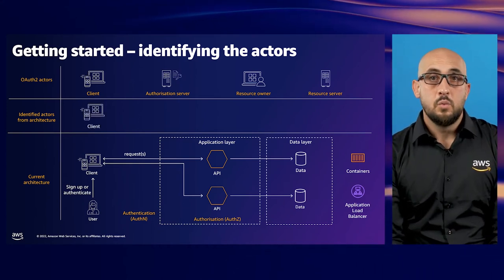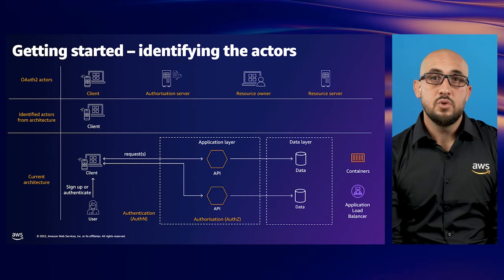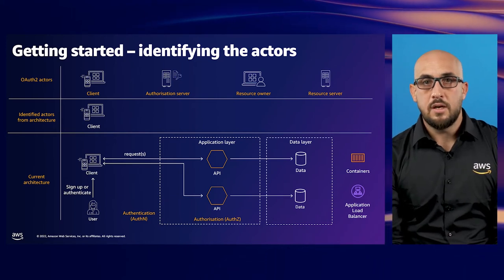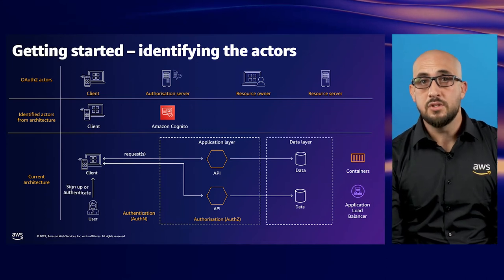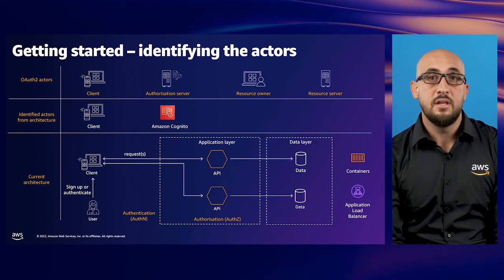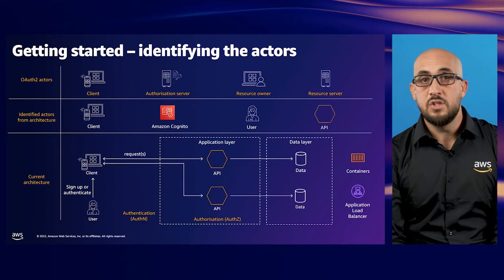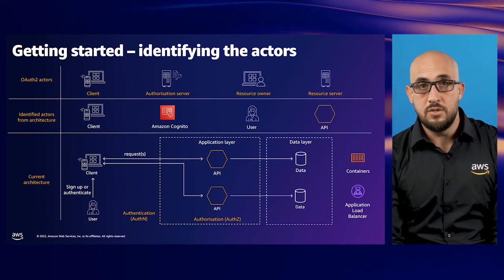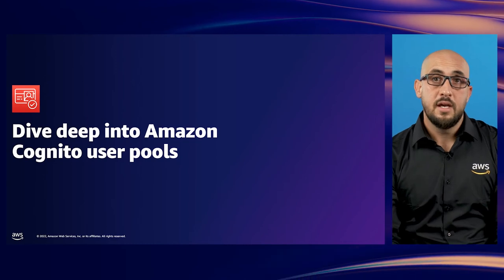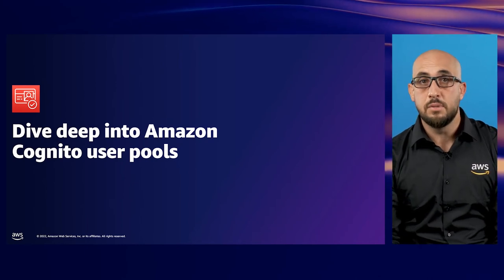To help James get started, let's identify the OAuth 2 actors as part of this architecture needed for the authorization flow. Firstly, the client is acting as a web app making requests to the APIs within the application layer. The user makes initial contact to the app and would like to authenticate to gain access. Amazon Cognito acts as the authorization server, assisting with authentication and authorization using the authorization code grant flow. The resource owner is the user interacting with the application, and the resource server is the individual APIs servicing the data for these users.